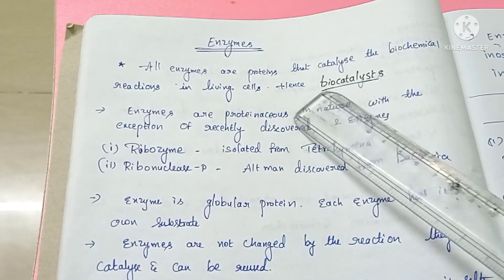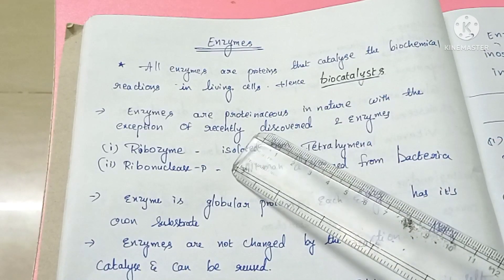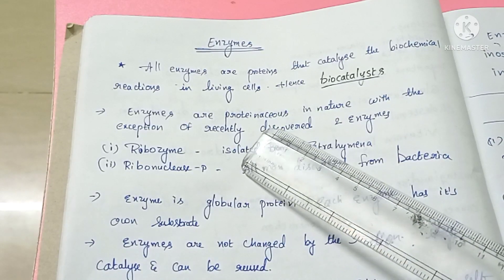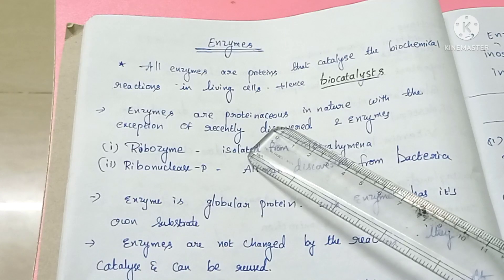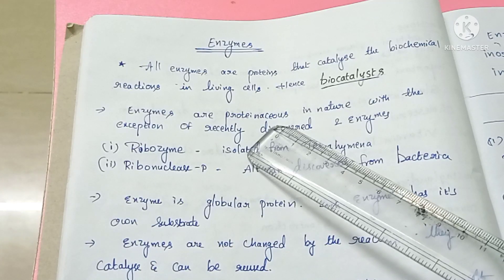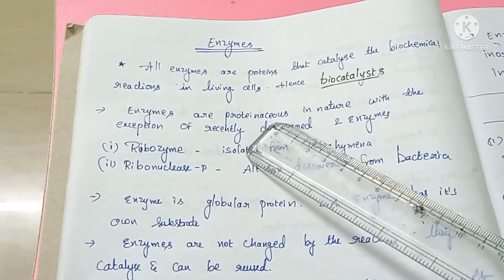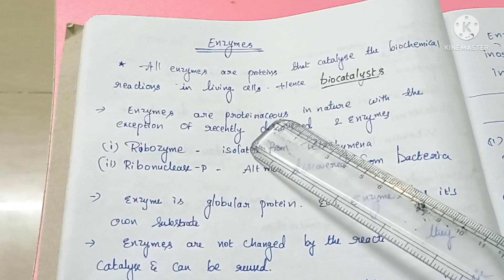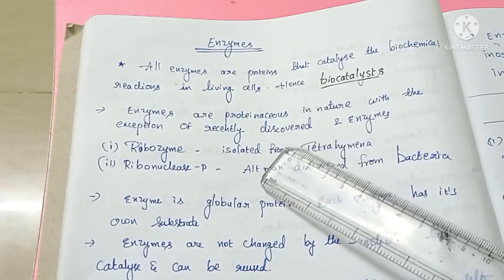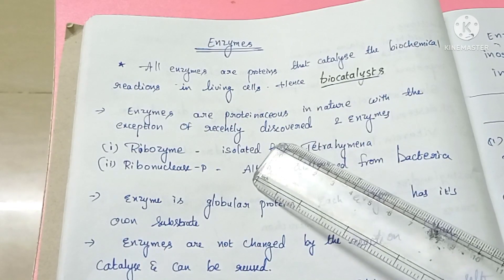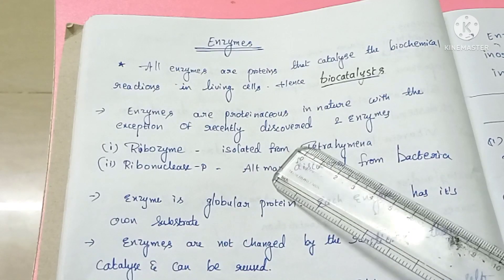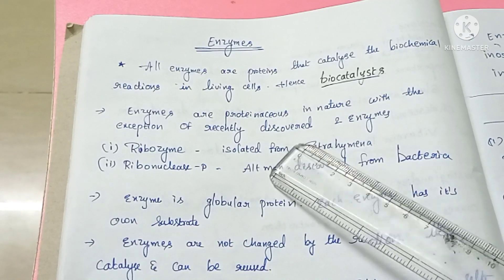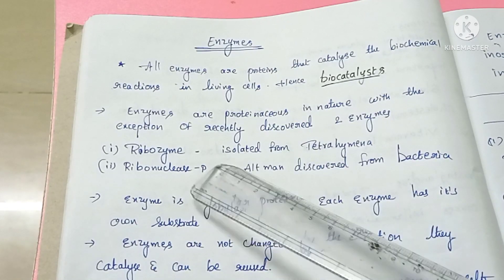Regarding their chemical nature, enzymes are proteinaceous in nature — they are made up of proteins. The concept is that all enzymes are proteins, but there are two exceptions: two enzymes that are not proteins.